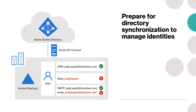The next step is to prepare for directory synchronization to manage identities. There are a couple of things to keep in mind when planning the implementation of directory synchronization, including directory preparation and the requirements and functionality of Azure Active Directory. Directory preparation covers areas including attribute updates, auditing, planning, and domain controller placement.